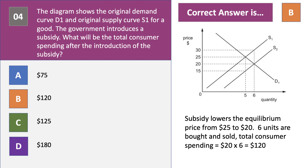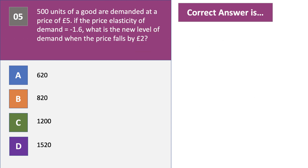Question five: 500 units of a good are demanded at a price of £5. If the price elasticity of demand is minus 1.6, what is the new level of demand when the price falls by £2? Press pause and have a go. The price has fallen by £2 — that's a 40% reduction in price, so more units will be demanded.